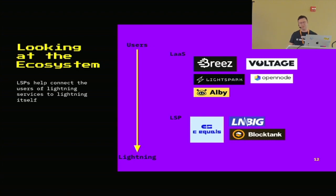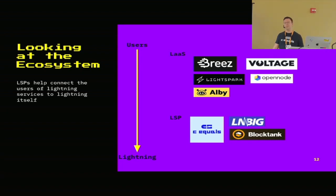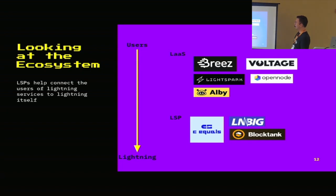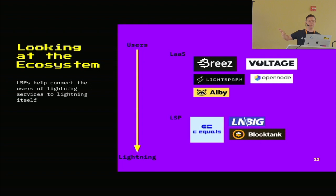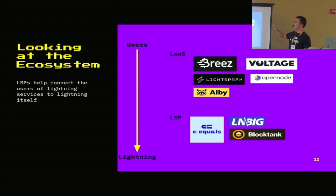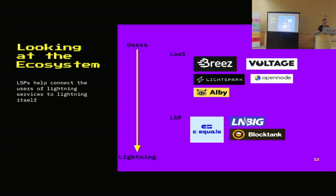I took those companies from before and put them into this graph. Companies like Voltage, LightSpark, OpenNode, and Alby are places where you can get onboard and not necessarily know much about Lightning — get onto a node, send and receive payments. Down here is where we are: LSPs — C=, LNBIG, BlockTank — places where you can get liquidity. In the future, I see these two categories working a lot together, where companies specializing in user-facing services don't have to be so involved in the liquidity story.